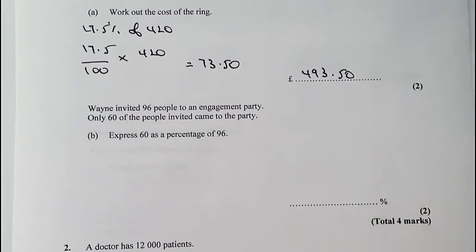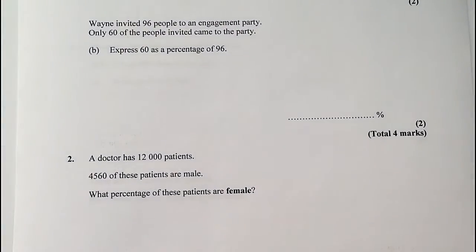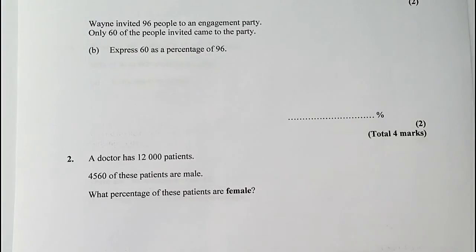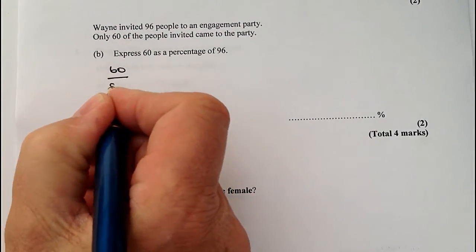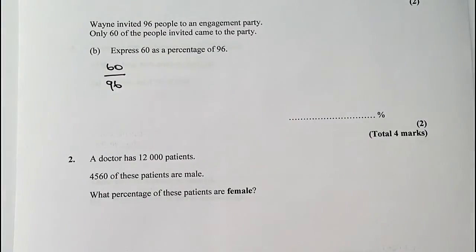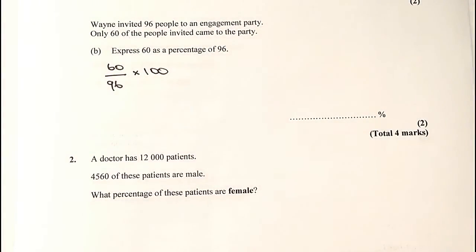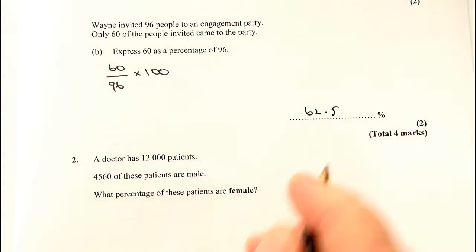So we've got this particular question: Wayne invites 96 people to an engagement party. Express 60 as a percentage of 96. So '60 as a percentage of 96' is quite an awkward way to write a question, but what they're saying is 60 out of 96 — what's that as a percentage? To work that out, you multiply it by 100. Remember, a percentage means out of 100. And if you work that out, it'll come out at 62.5%.